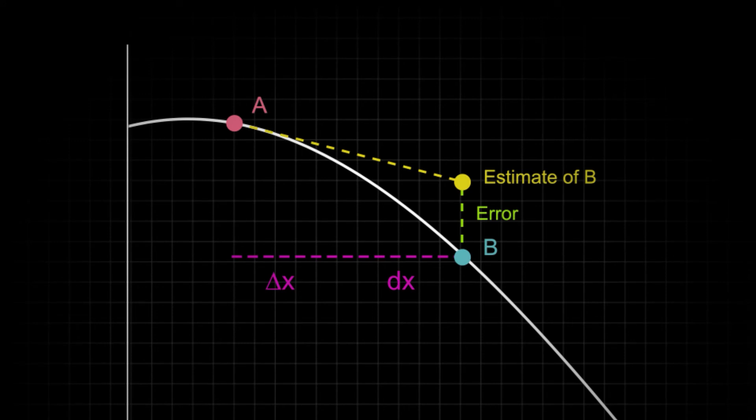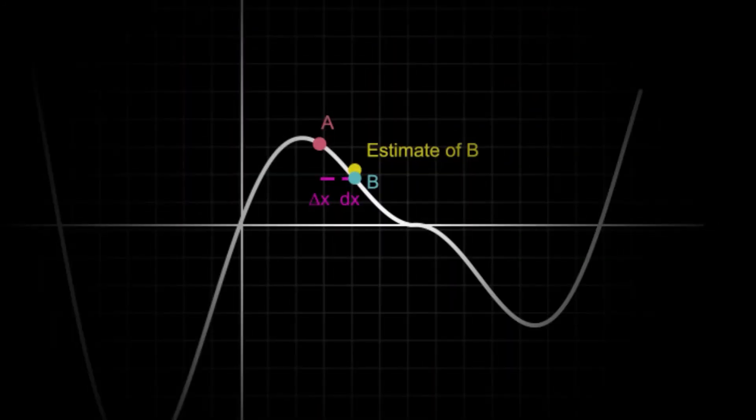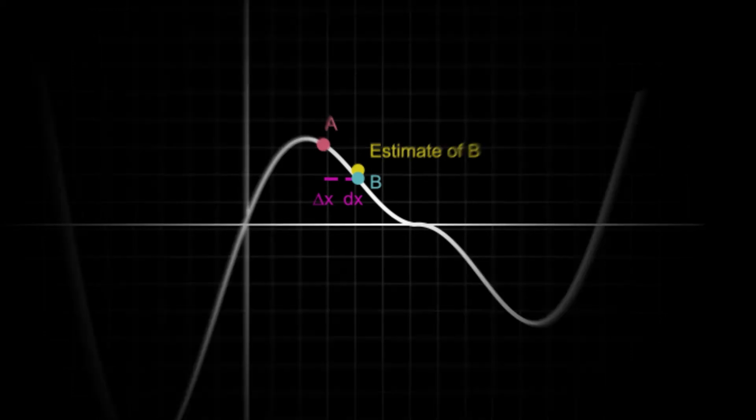But remember, we zoomed in. Let's pull back out and see how close our estimate actually looks. Back at our original scale, we can see the points are actually much closer than they first appeared. In fact, the actual error for this value is about 10%.